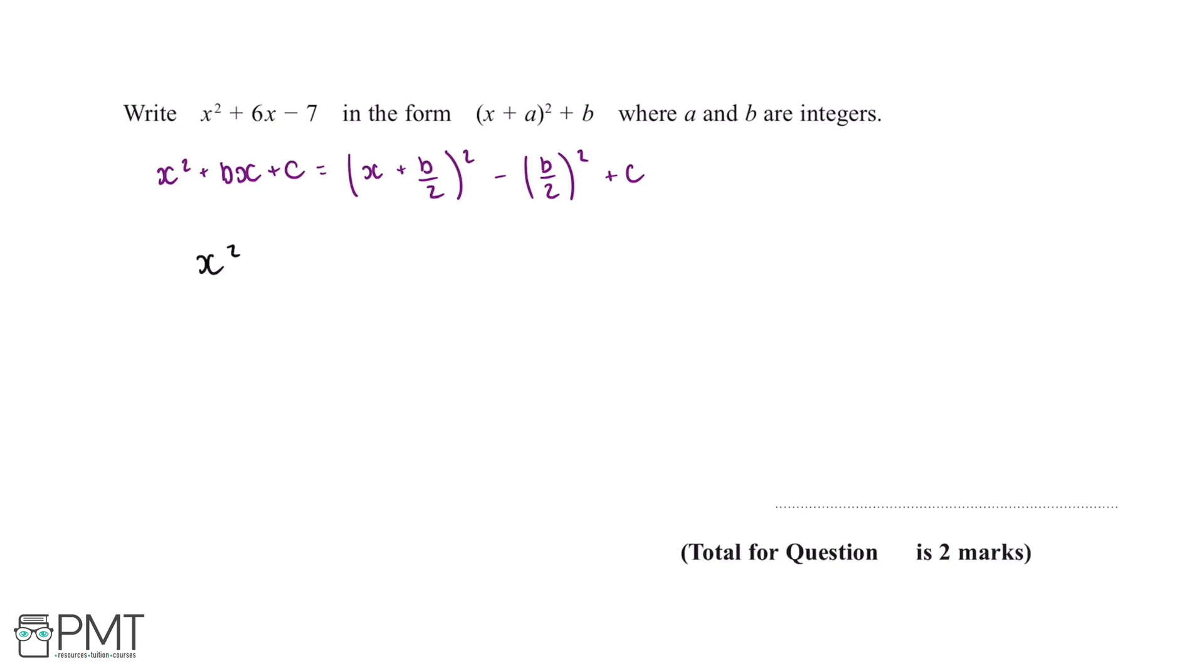We've been told to write x squared plus 6x minus 7 into this form. The first thing we're going to do is add brackets and change this x squared term to an x term.